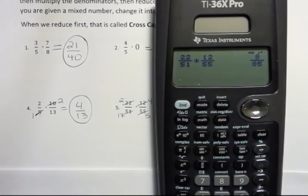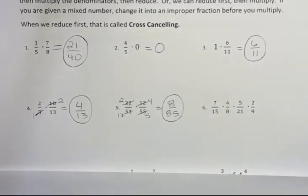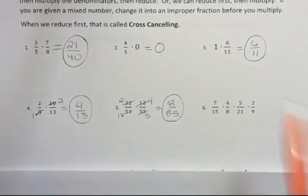And that gives me 8 over 85. Pretty nice, huh? The other thing is you can always check to see if something can be simplified by putting in there, and I'll show you that in a minute.